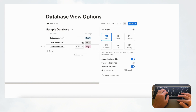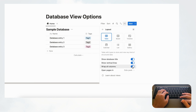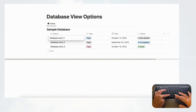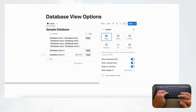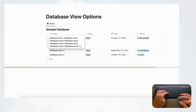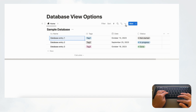Then we have 'Wrap All Columns'. Wrap means that if you have a lot of text, it will show everything when toggled on. If you toggle it off, it saves space by hiding overflow text. For example, if you toggle it off and type a lot of content, it gets hidden — but if you toggle it on you see everything. This depends on whether it's important to see all data at one glance.